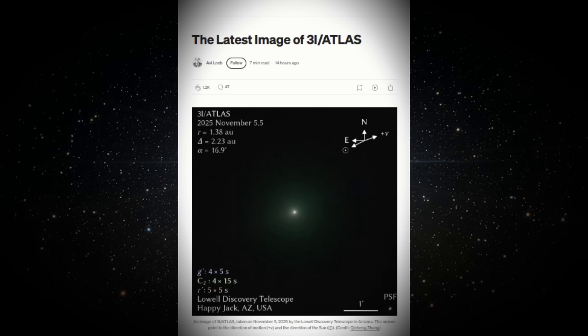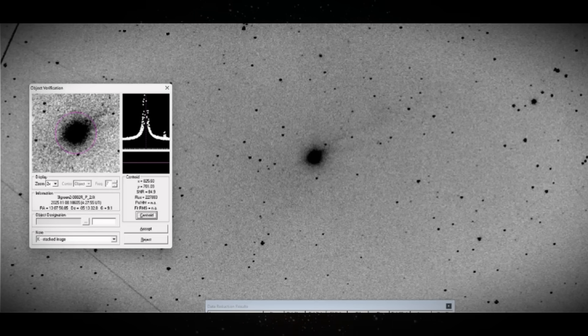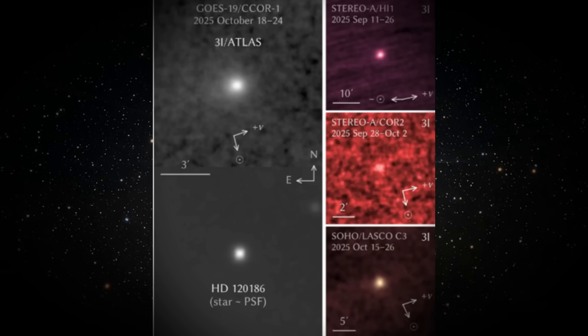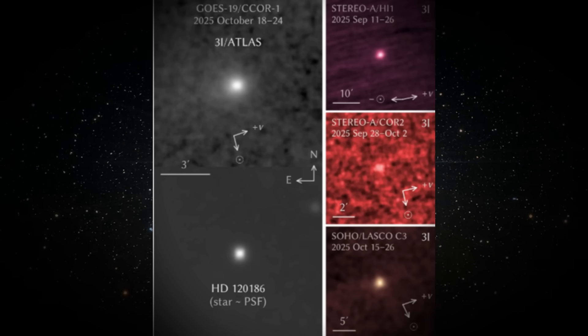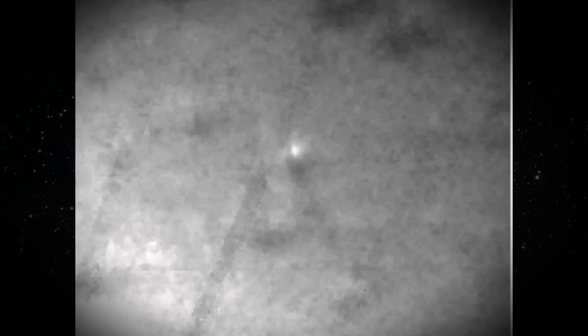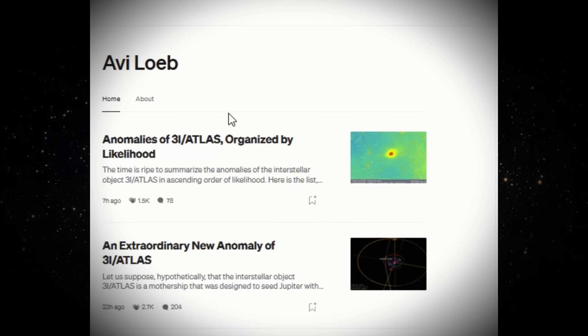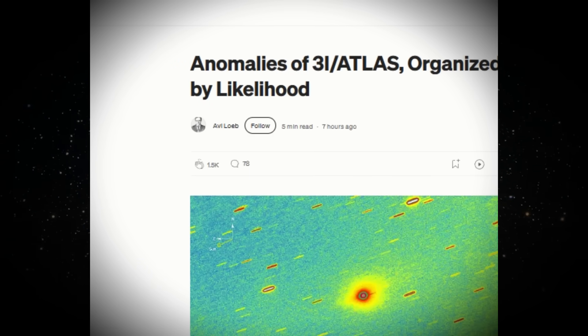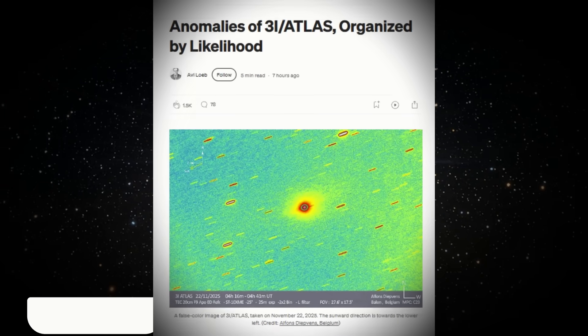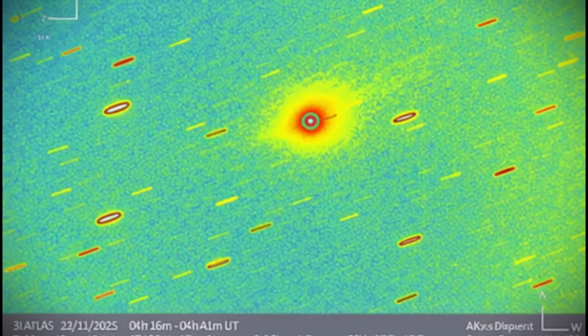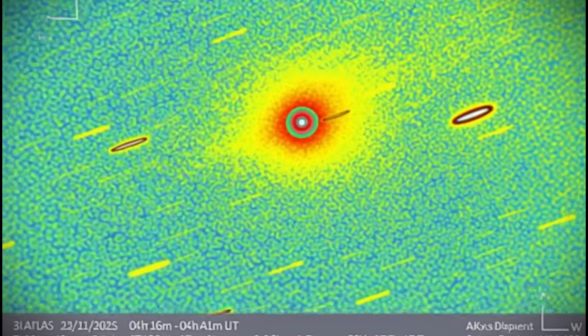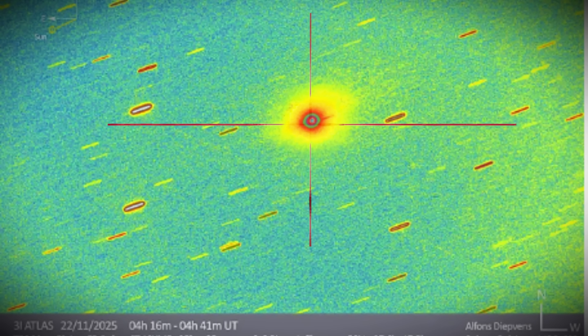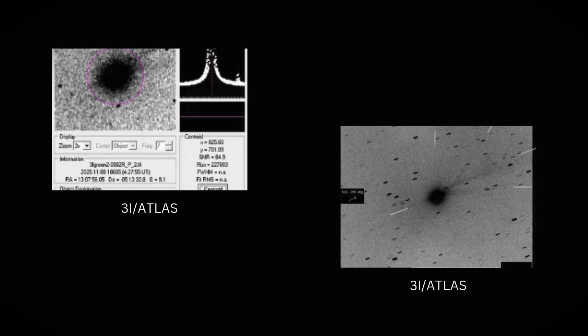But here's where the story goes from impossible to completely insane. When we observe objects in space, they follow predictable trajectories, like cosmic cannonballs. Once fired, they follow a path determined by gravity. But 3i Atlas isn't doing this. It's showing signs of non-gravitational acceleration, as if it had small thrusters making micro-adjustments to the trajectory. Scientists measured this mysterious force and discovered that it changed the object's path by 62,000 miles.